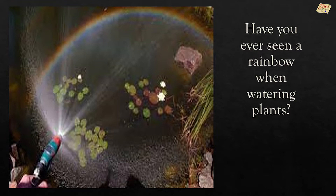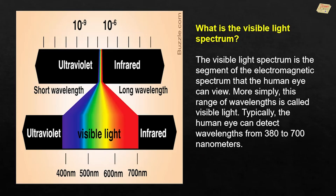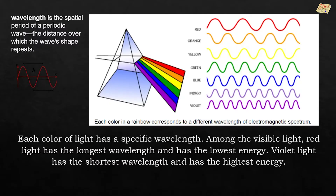Have you ever seen a rainbow when watering plants? The spectrum is the range of different colors produced when light passes through a glass prism or through a drop of water. A rainbow shows the colors in the visible light spectrum. The visible light spectrum is the segment of the electromagnetic spectrum that the human eye can view.